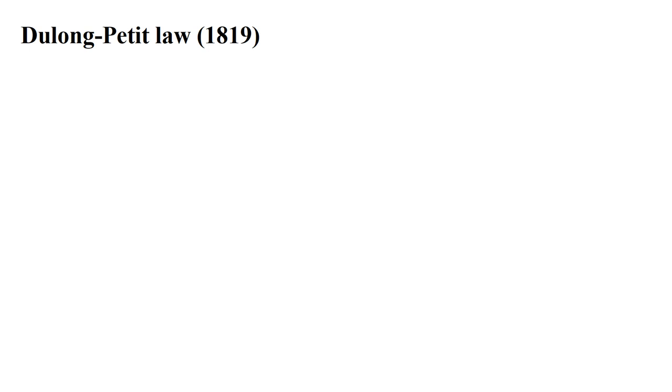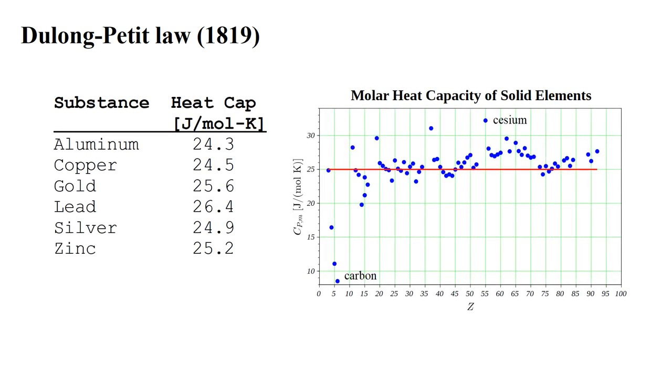Now, let's consider the heat capacity of solids, since that is the state we generally deal with at very low temperatures. In 1819, the Dulong-Petit law was proposed. Dulong and Petit noticed that the experimental heat capacity of many solids is near 25 joules per mole Kelvin. For example, in the table at left are values for several metals at room temperature, ranging from 24.3 for aluminum to 26.4 for lead. Recall that one mole is Avogadro's number of molecules, about 6 times 10 to the 23rd.